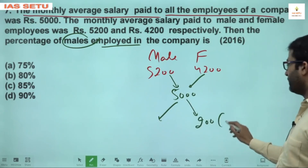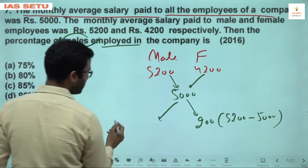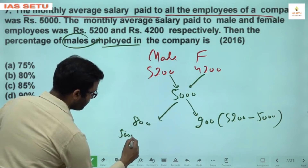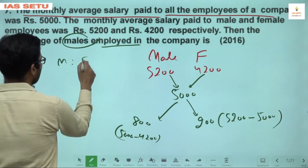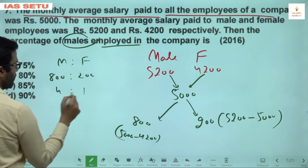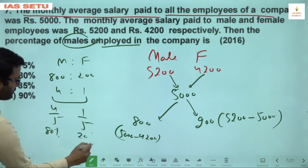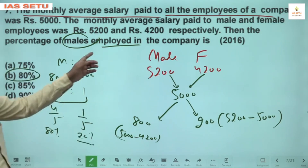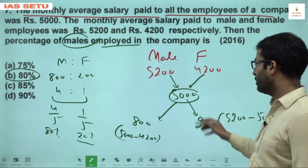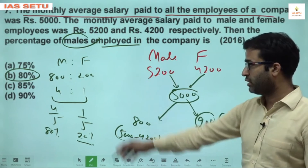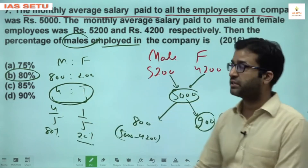By allegation, the ratio of male to female employees is 800 : 200 = 4 : 1. Total parts = 5, so male = 4/5 and female = 1/5. Therefore, 80% of the employees are male and 20% are female. Question 7 answer is B.